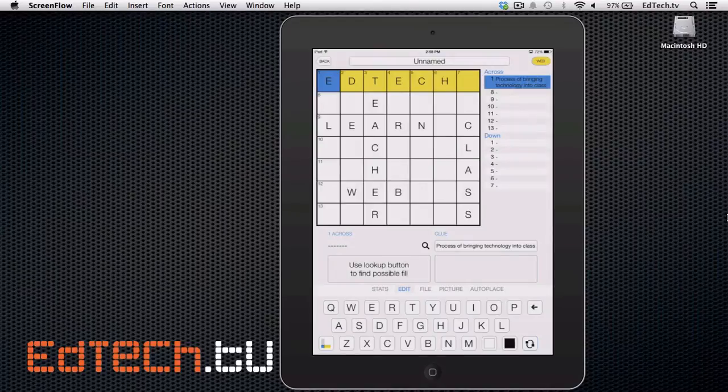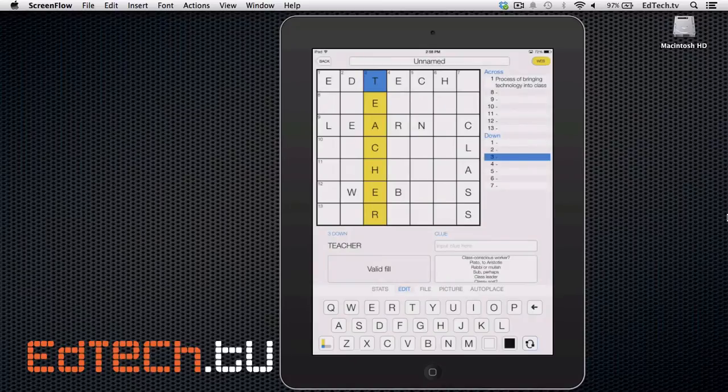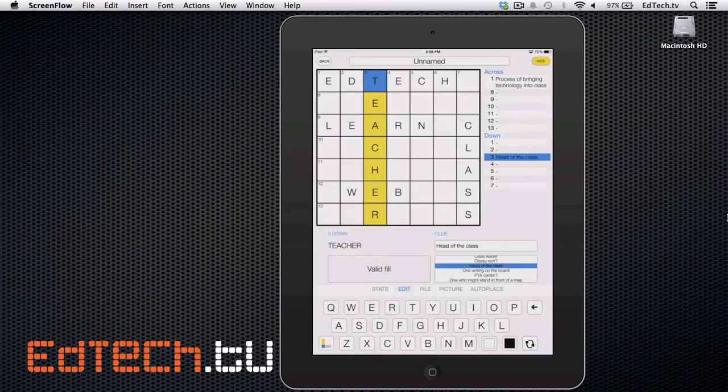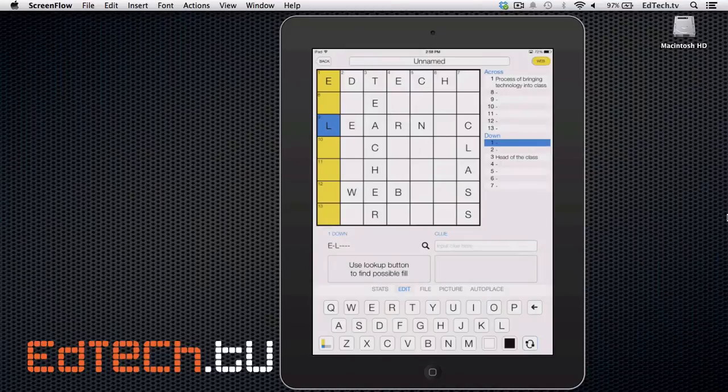So now I've got all of my words. Now, the first one is EdTech. It doesn't recognize that word. So I might have to create my own clue. The process of bringing technology into class. Now, if I tap on the T for Teacher and double tap on it, again, I can choose if I want to use any of these clues. So again, I like head of the class. And I'm going to go right through all of them.